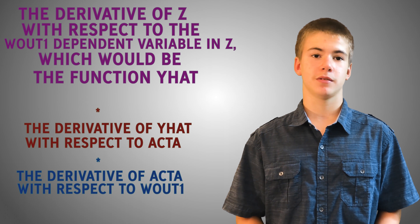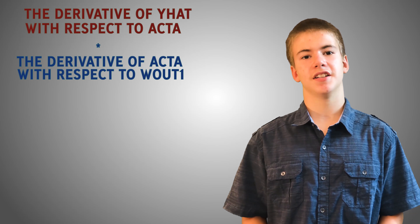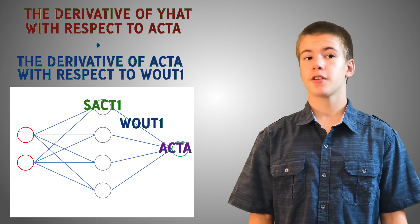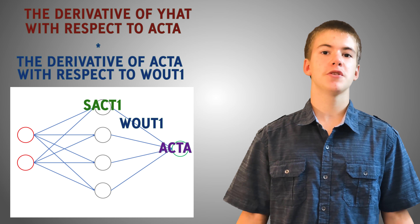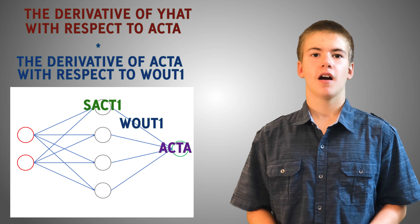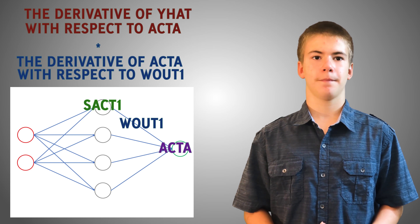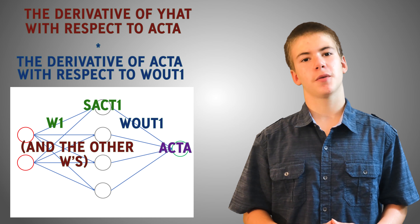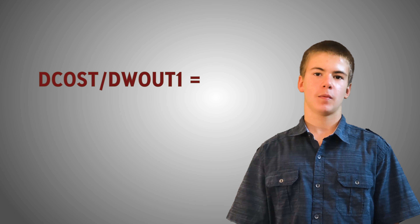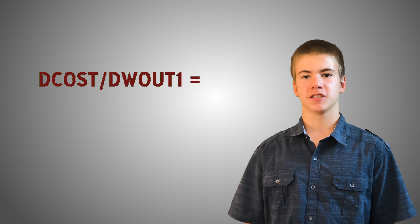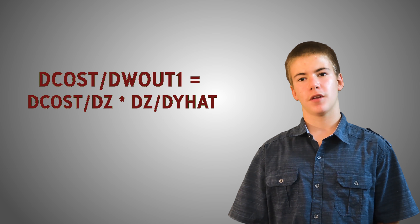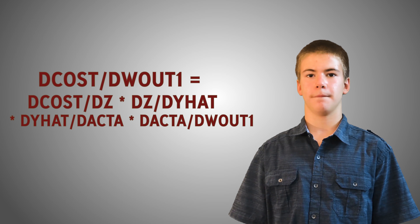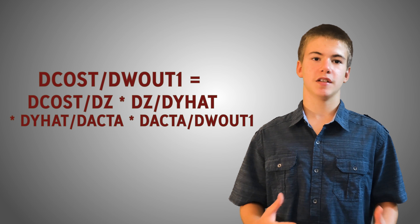Let's say we want to calculate the derivative of our cost function with respect to w out 1. Since the cost function is 1 half of y minus y hat squared, we can start by calling z equals y minus y hat. Thus, we could define the derivative of the cost with respect to w out 1 as the derivative of the cost with respect to z, times the derivative of z with respect to y hat, times the derivative of y hat with respect to act a, times the derivative of act a with respect to w out 1. Finally, we got to the end of the chain rule for w out 1, because s act 1 does not change when w out 1 changes.